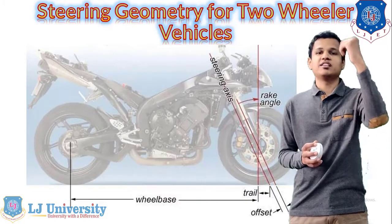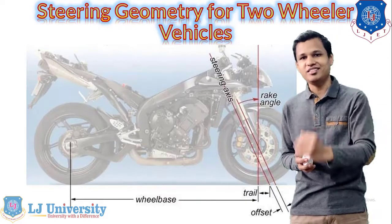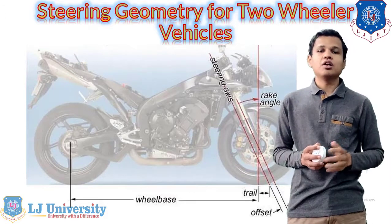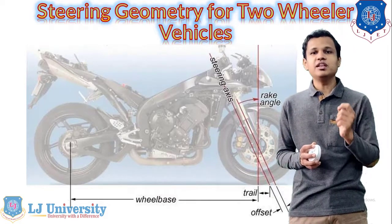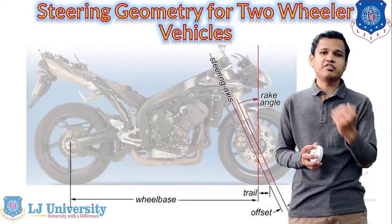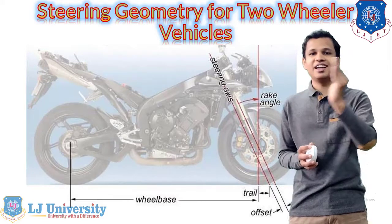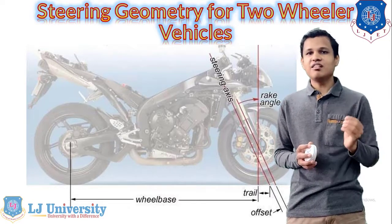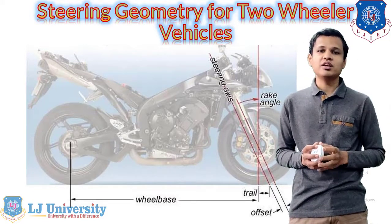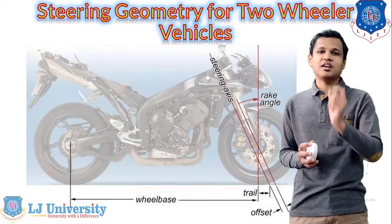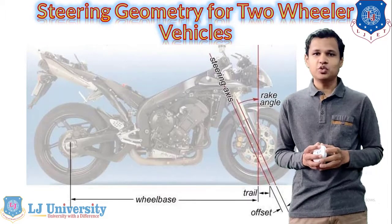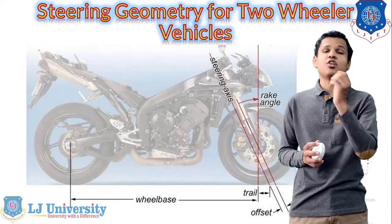The caster angle is the angle made by the steering axis with the vertical center line. The wheelbase is the distance between the front and the rear wheel. One extra geometry factor is shown here that is known as offset.